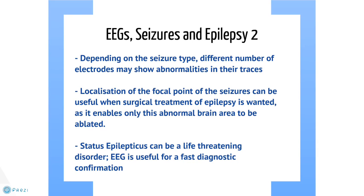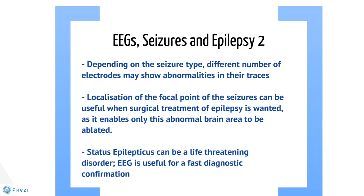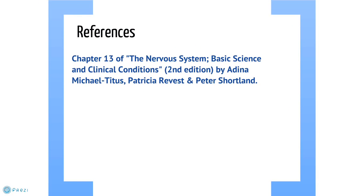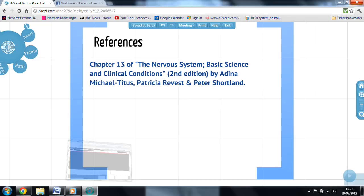Status epilepticus occurs when there is a recurrent seizing state for over 30 minutes. EEGs can be used to confirm that the seizures are occurring, and as status epilepticus is a life-threatening condition, EEGs are therefore able to help confirm diagnosis before permanent neurological damage occurs. In conclusion, EEG is a method by which the electrical activity of the brain can be measured and imaged in traces. This has proved medically useful in the diagnosis of epilepsy, a neurological disorder.